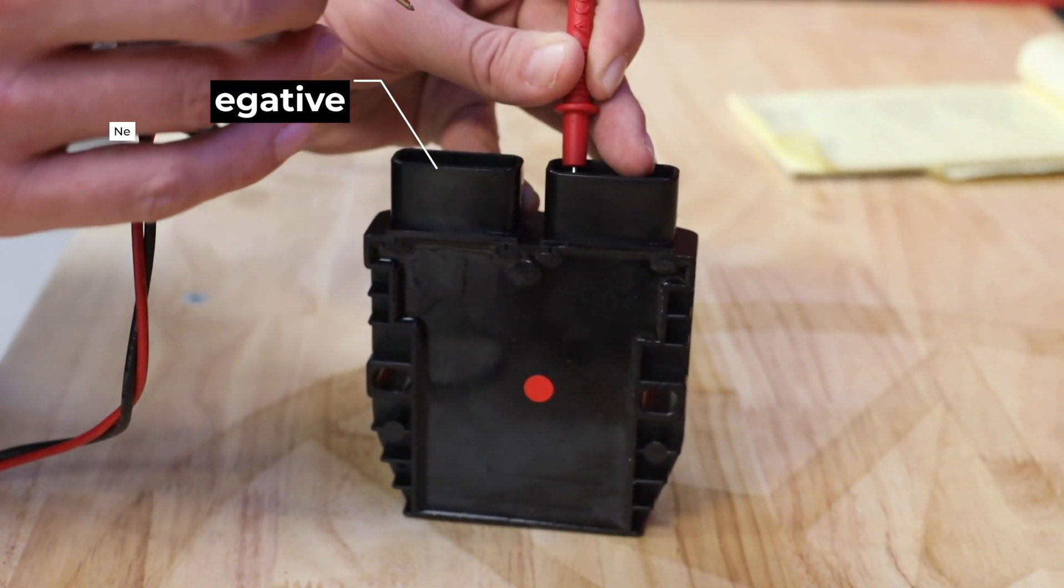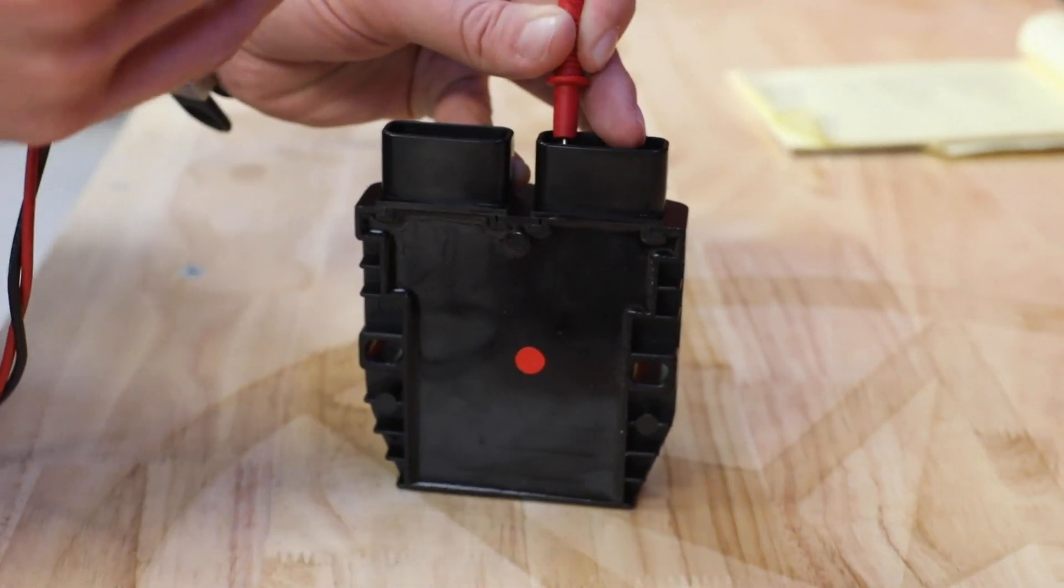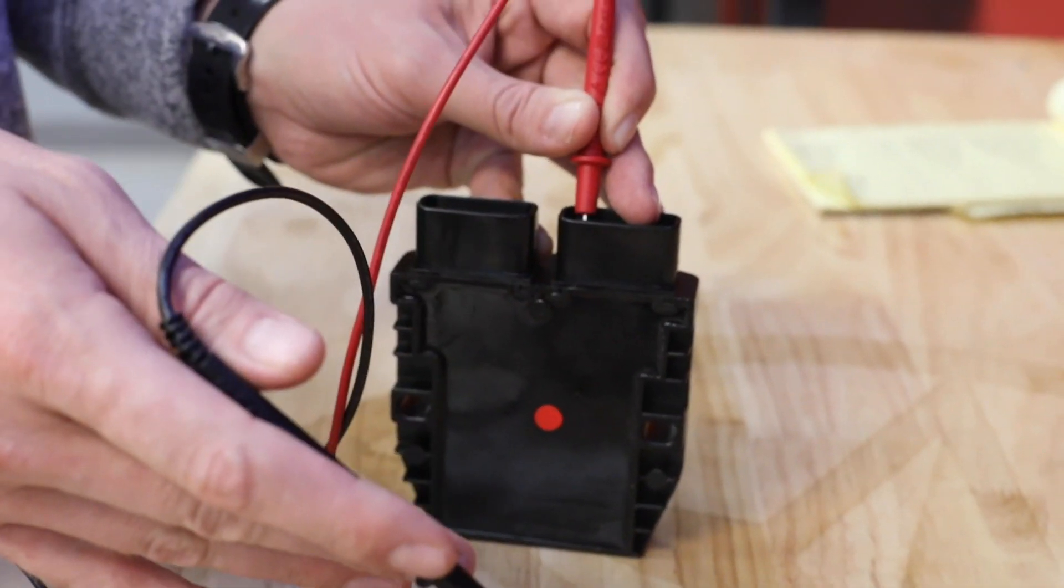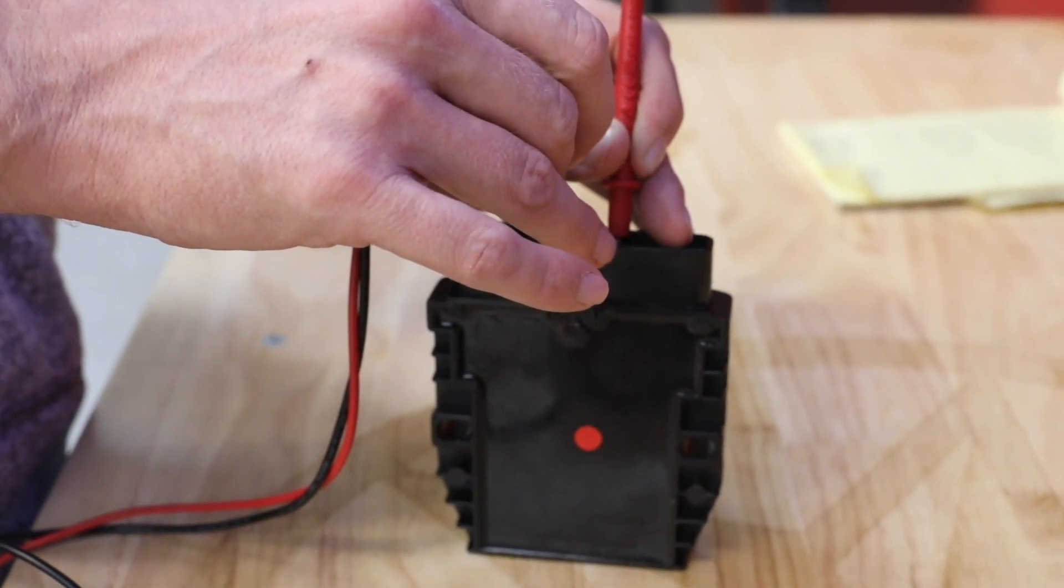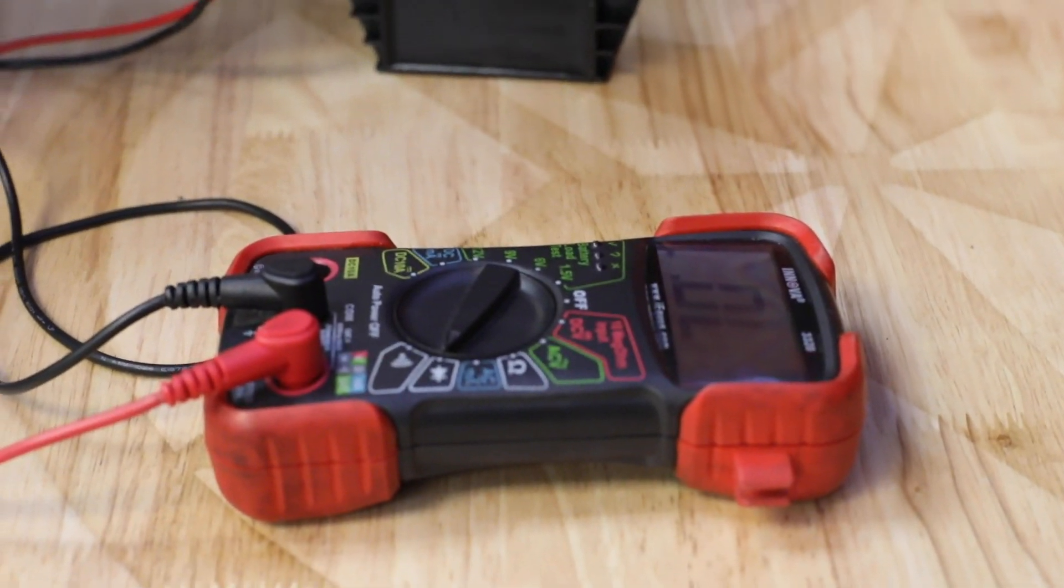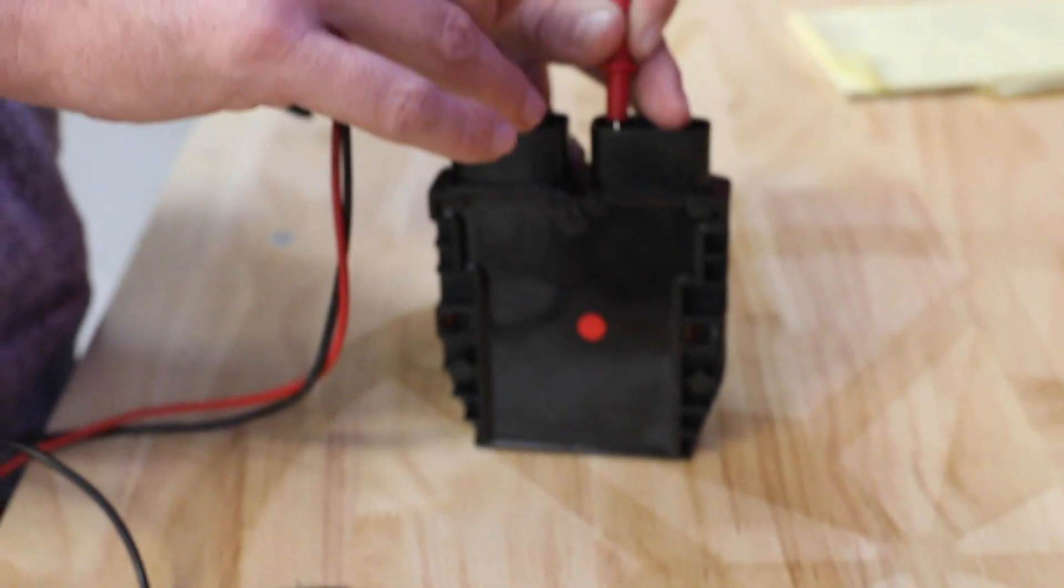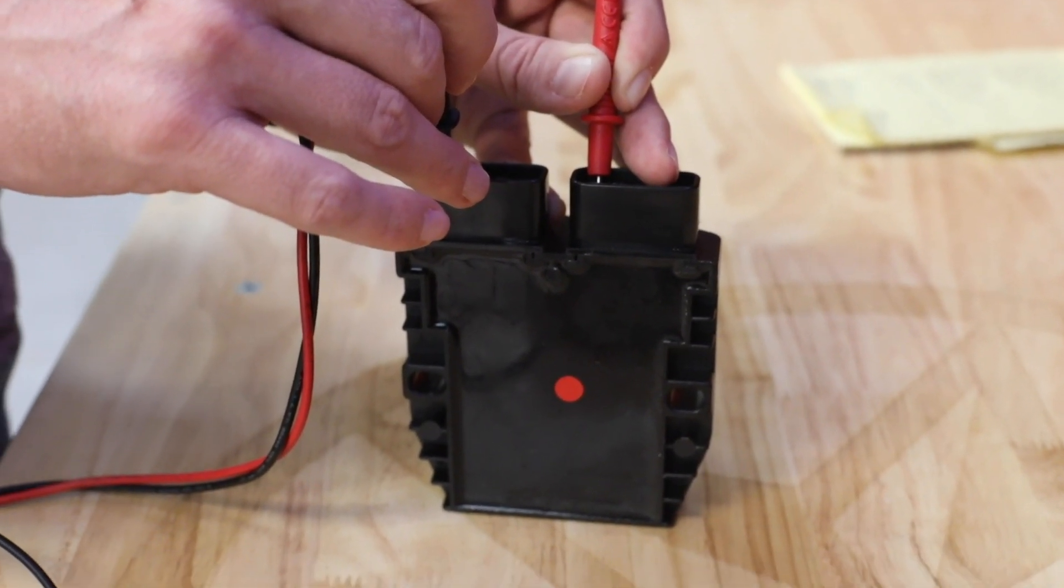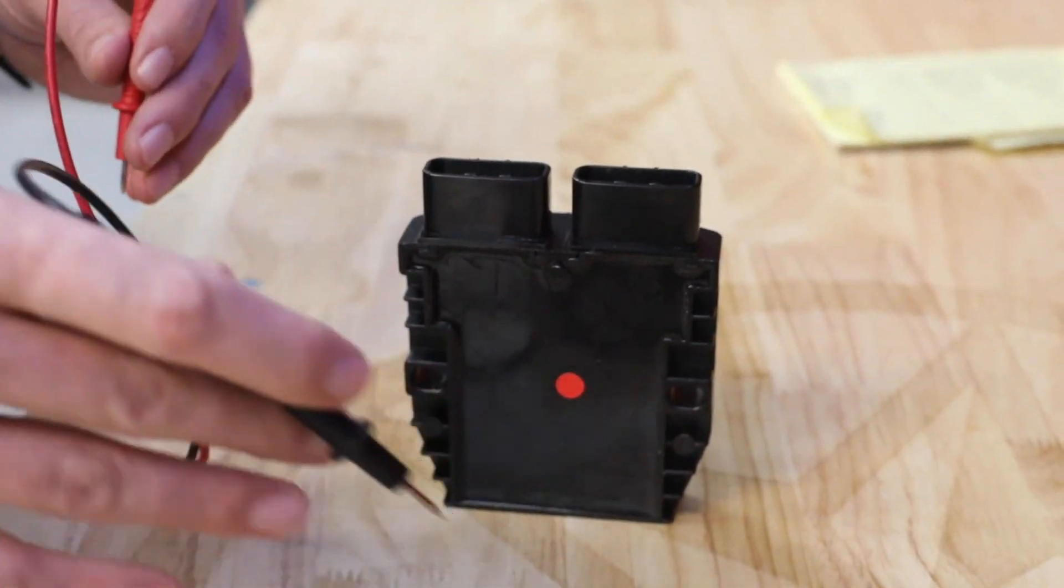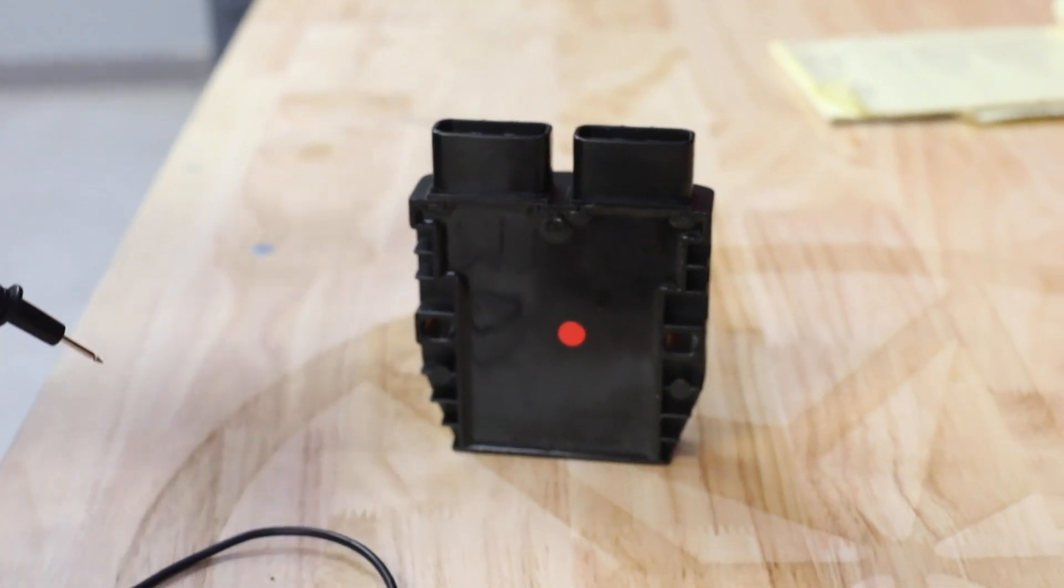Now in this test, because the current can only pass through the diode one way, we want to see OL on our multimeter. All right, and that's exactly what we wanted to see across all three pins. I'm reading OL so that way we know that the current's not back feeding.